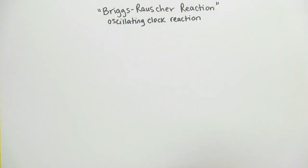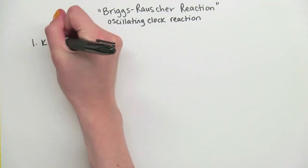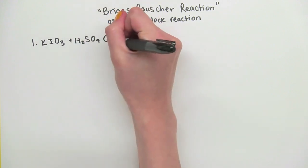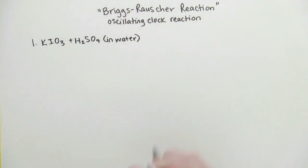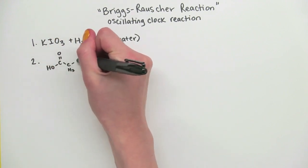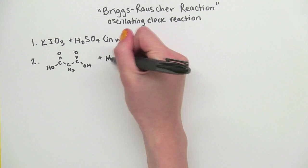So what happened? Dr. Dolan mixed three clear, colorless solutions together. The first solution contains potassium iodate and sulfuric acid dissolved in water. The second solution is malonic acid and manganese sulfate monohydrate in water.